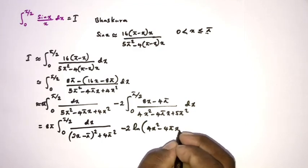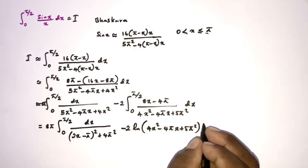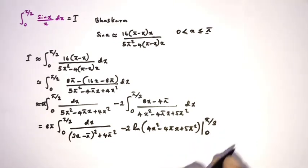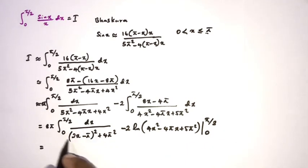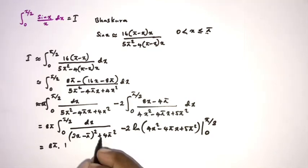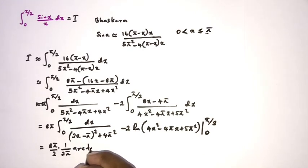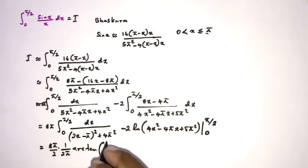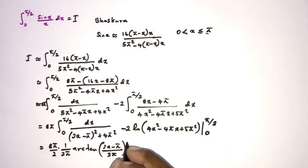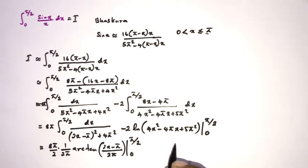So we have natural log of (4x² − 4πx + 5π²) evaluated from 0 to π/2. For the arctan part, we have 8π times (1/a) times arctan((2x − π)/a), where a equals 2π, and we divide by the coefficient 2. This gives arctan((2x − π) / (2π)), evaluated from 0 to π/2.